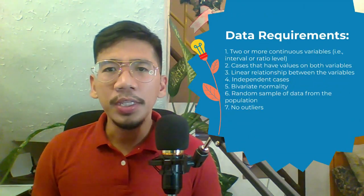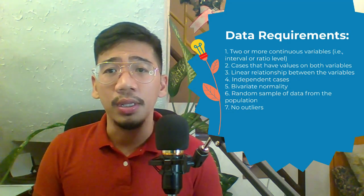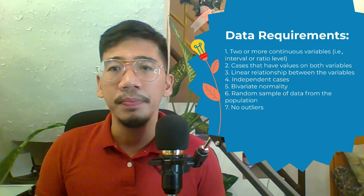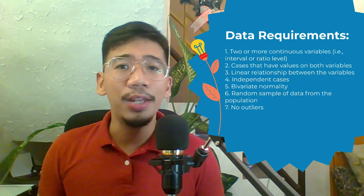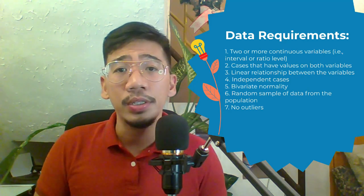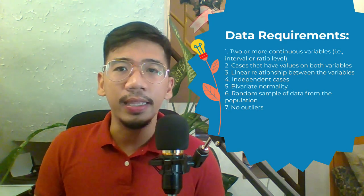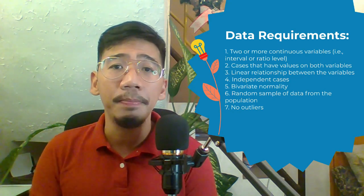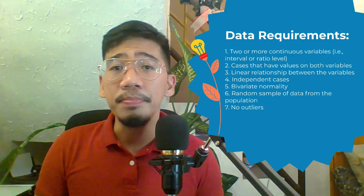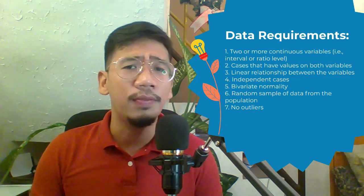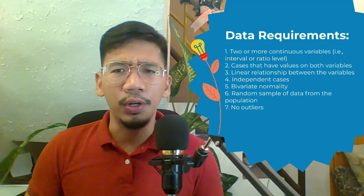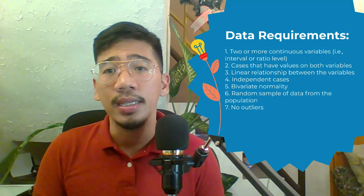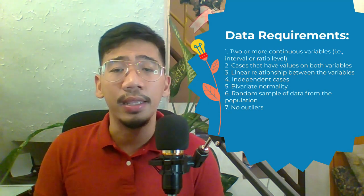You must meet the following requirements in order to run Pearson correlation. There must be two or more continuous variables, either at the interval or ratio level. Cases should have values on both variables, and a linear relationship between the variables should be present. There should also be independence of observation, meaning there is no relationship between the values of variables between cases — no case can influence another case on any variable.